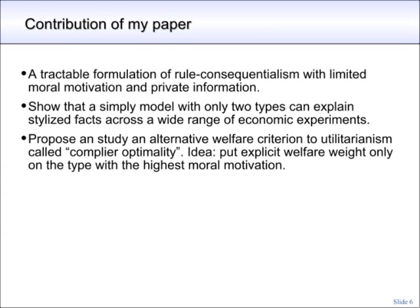The contribution of my paper is as follows. It provides a tractable formulation of rule consequentialism that allows for limited moral motivation and private information of types. I show that already a simple model with only two types can explain stylized facts across a wide range of economic experiments. There is also a third contribution: I propose an alternative welfare criterion, which I call complier optimality. Instead of a utilitarian criterion that puts equal welfare weight on every individual, a complier optimal welfare criterion only puts explicit welfare weight on those individuals who have the highest moral motivation. In the moment this concept may sound a bit weird, but I will show that empirically and also normatively, it has certain appealing properties.